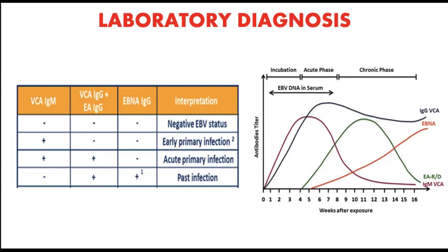If the patient is positive for anti-VCA IgM but has no antibody to EBNA, this indicates new or recent infection. If they are positive for anti-VCA IgM and also positive for anti-VCA IgG at high or rising levels, but negative for EBNA IgG, this also indicates acute primary infection — early primary infection shows only IgM, while acute primary infection shows both IgM and IgG for VCA.